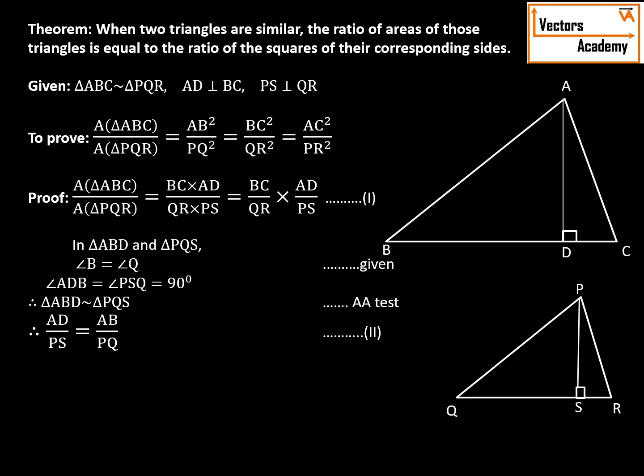Now as we know that the original triangles, the larger triangles that is ABC and PQR, are already similar, so even their ratio will be same. AB upon PQ will be equal to BC upon QR.